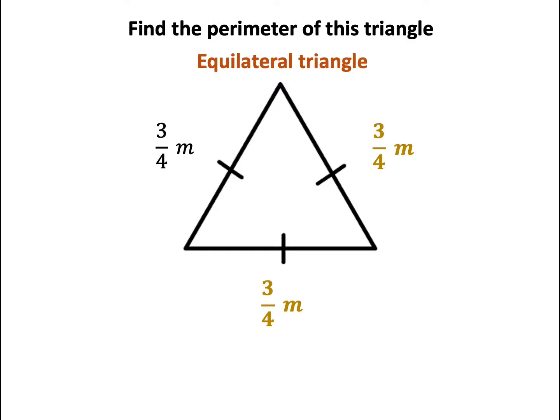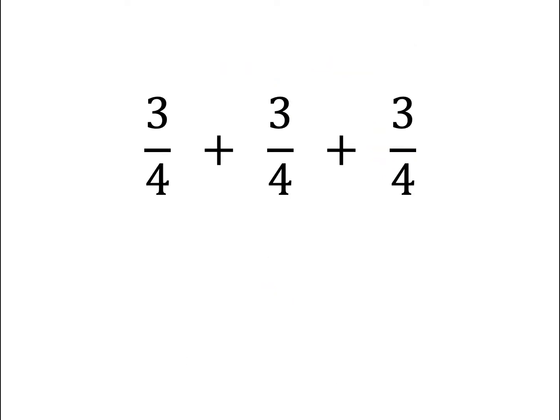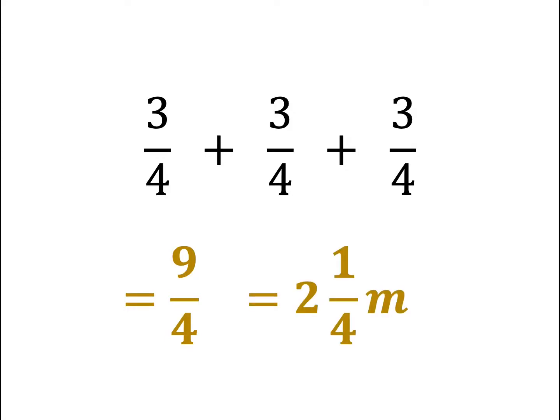Therefore, the other two lengths are also 3 out of 4 centimetres. Now we know all three lengths, we add them together. Adding these three fractions together gives us 9 out of 4. This can be changed into a mixed fraction of 2 and 1 quarter centimetres. That is the final answer.